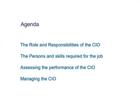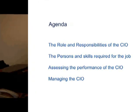Based on the different views regarding the Chief Information Officer, we intend to discuss the following: the role and responsibilities of the CIO; the person and skills required for this role; how to assess the performance of the CIO; and finally, how to effectively manage the CIO. Additionally, the role has been viewed as a technological expert — the player who ensures consistent availability. But more recently, the role has changed and has been viewed as a strategic business partner.